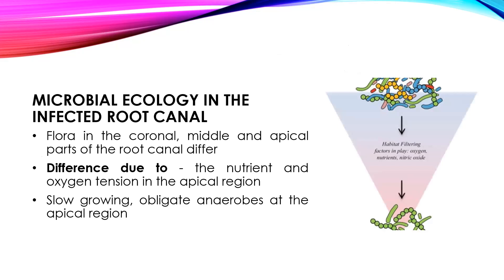How do these microorganisms differ in the canal? In the coronal portion, the middle portion, and the apical parts of the canal, there is a difference in nutrient availability and oxygen tension. Because of this, the microflora also differs. In the apical region, where oxygen tension is less and exogenous nutrition is not available, you have slow-growing obligate anaerobes.